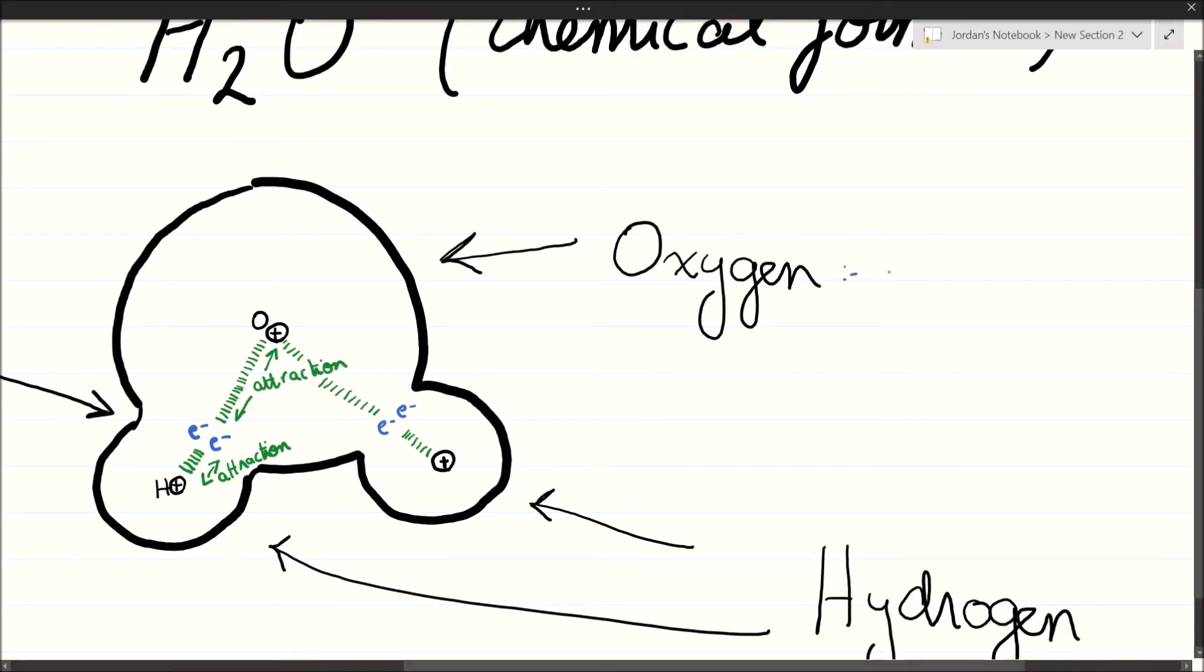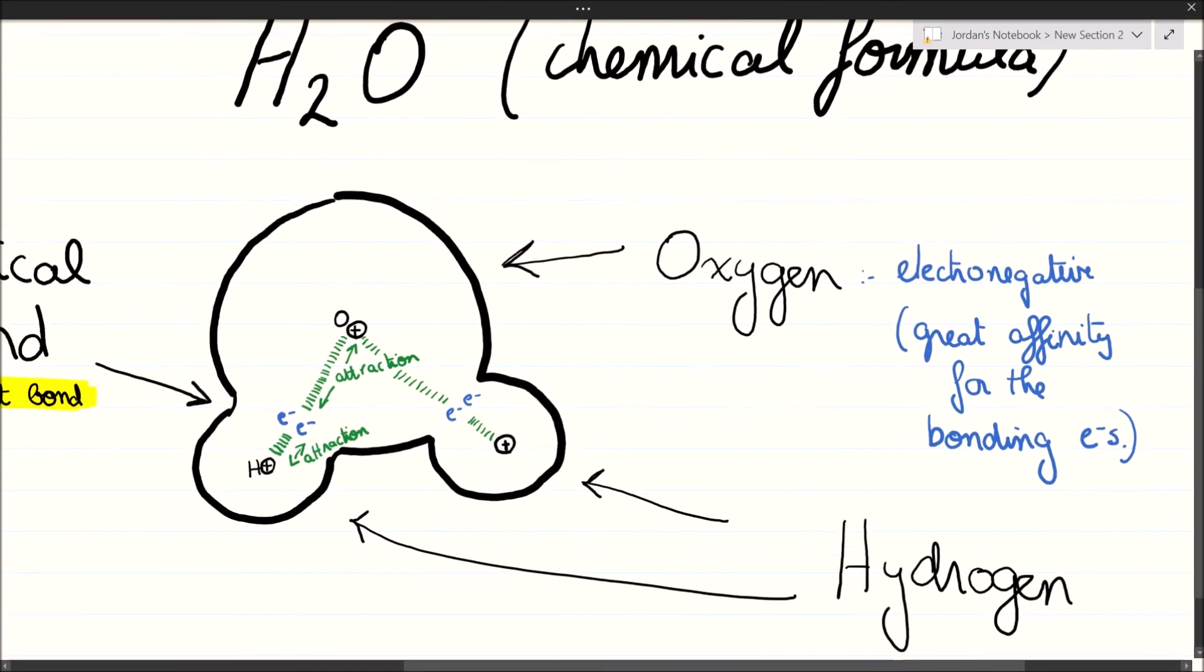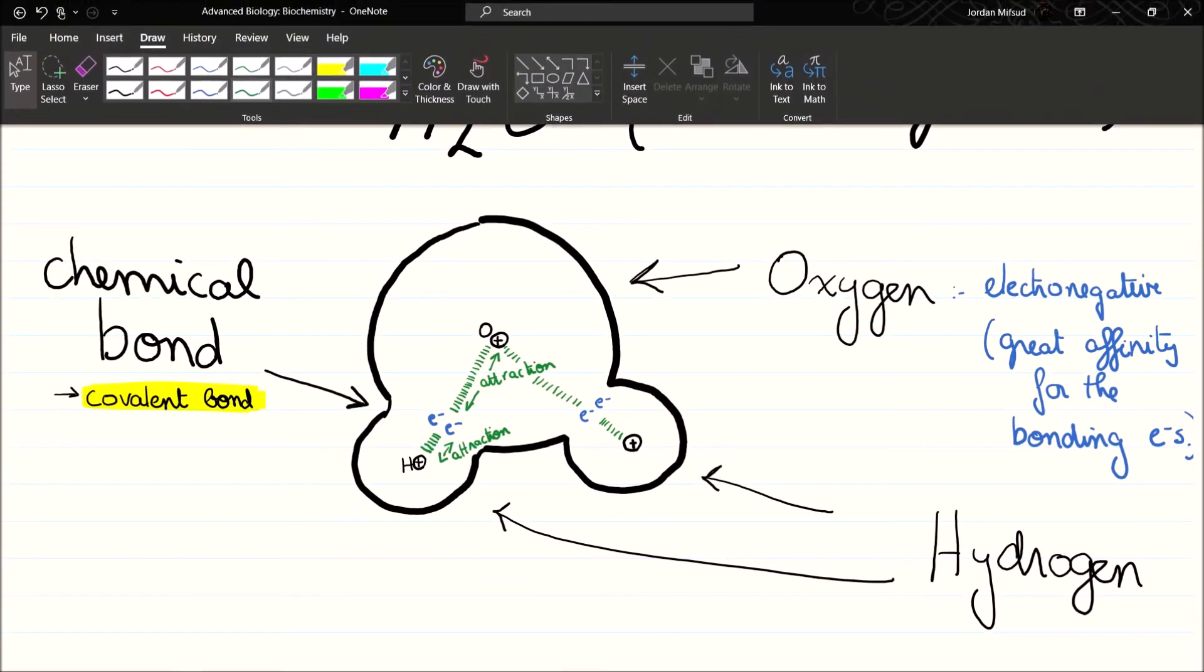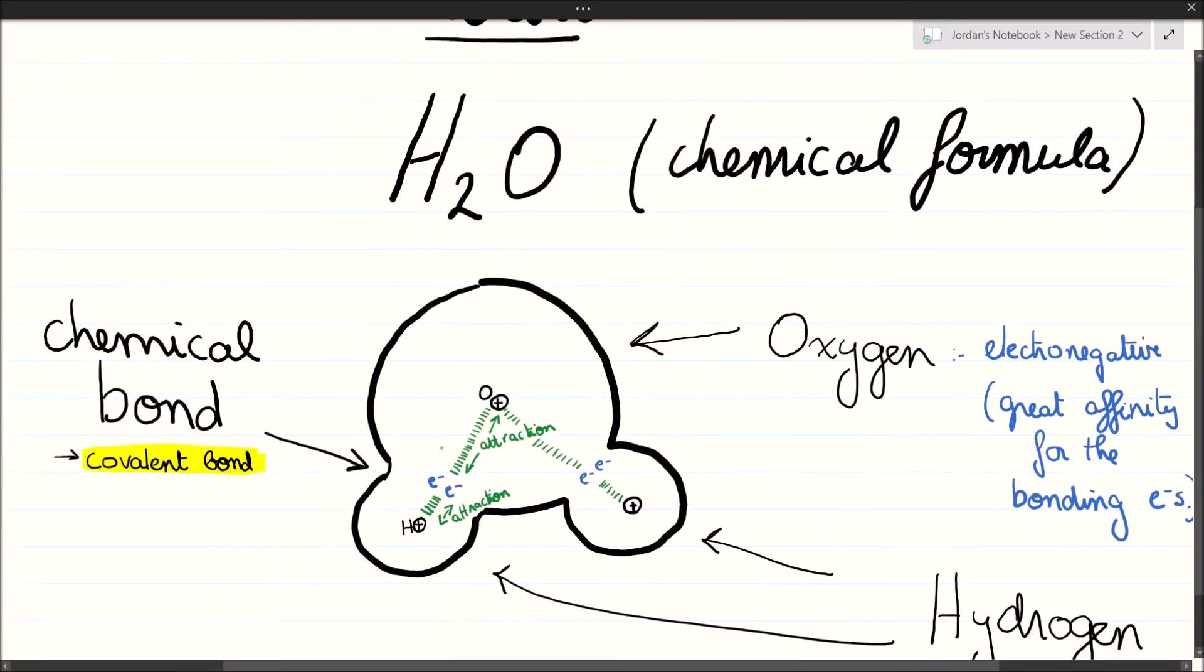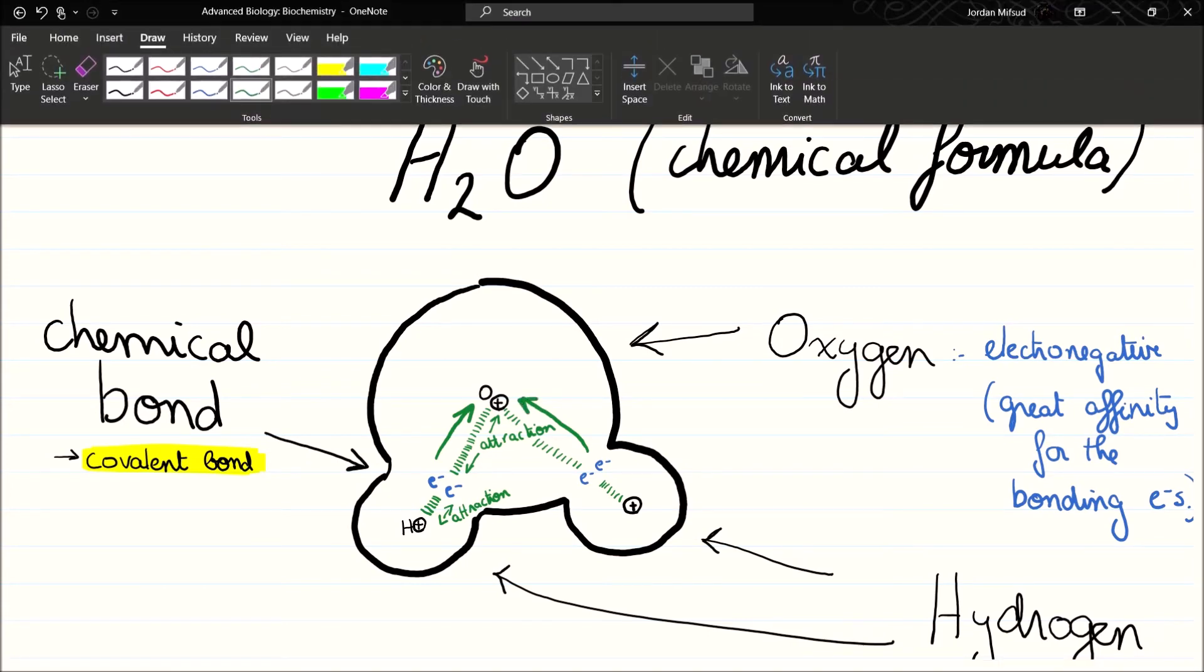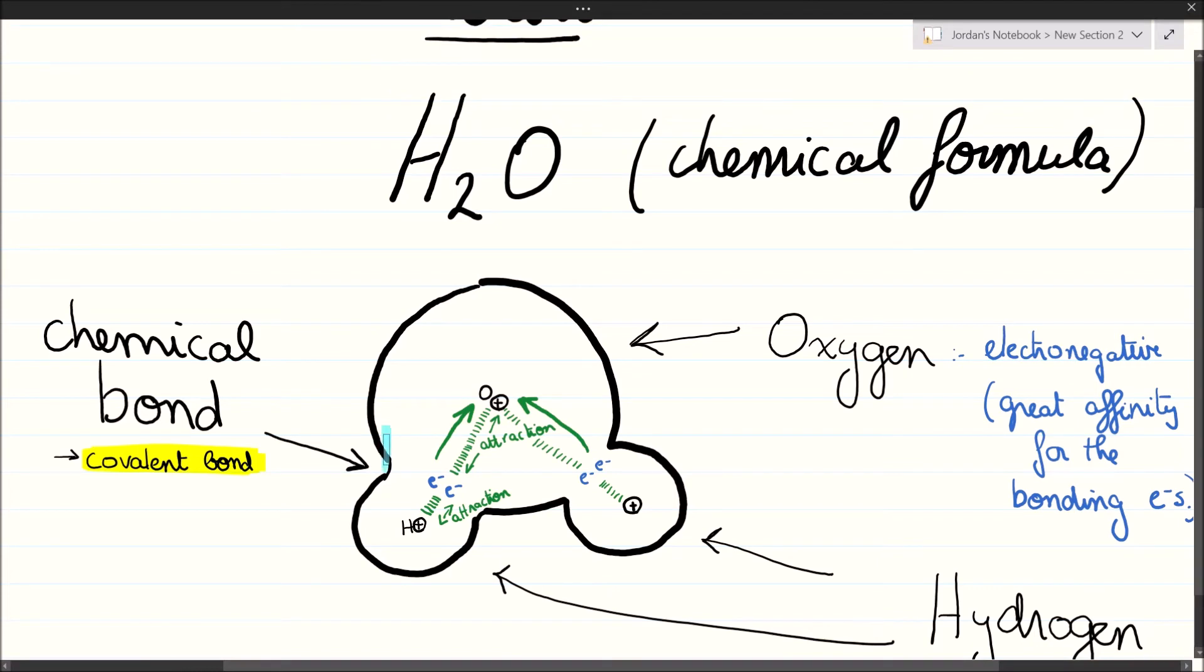If you get hold of the oxygen and the hydrogen atoms and tried to pull them apart, you'd feel their attraction in the same way that you'd feel the force opposing you when pulling apart a magnet stuck to another magnet. So that's a covalent bond. Many molecules and compounds have covalent bonds. What's so special about the covalent bonds in water? Oxygen is a very electronegative atom, which means that it strongly attracts bonding electrons much more than hydrogen.